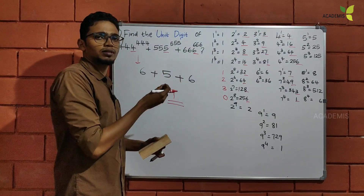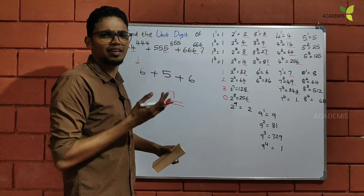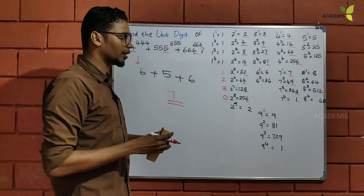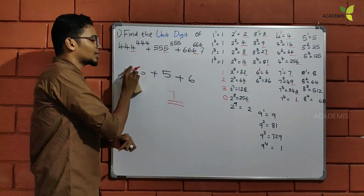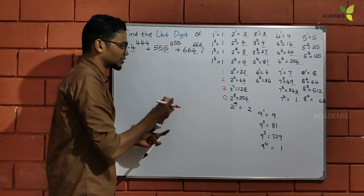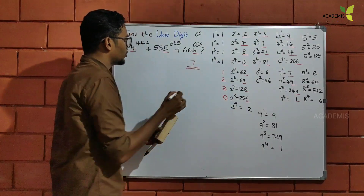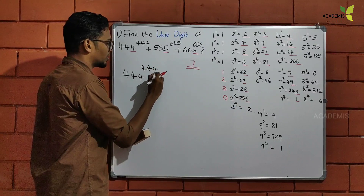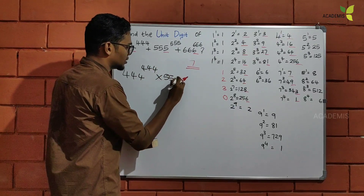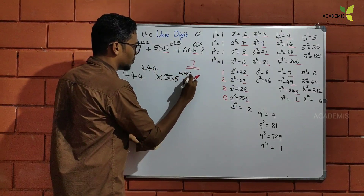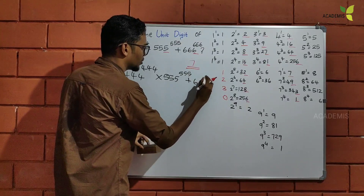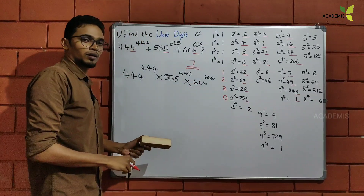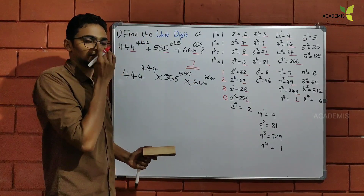I have to divide this down in terms of complexity. I am going to show you how to do this. I will show you how to use this cyclicity multiplication method. So the answer is 7. This is how to use it. 444 raised to 544, plus 10 raised to 5, plus 600 raised to 5 raised to 6. The answer is 0.